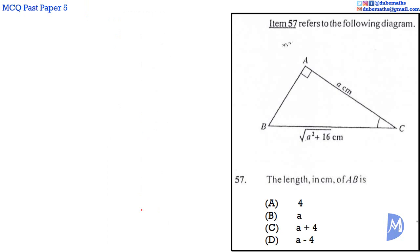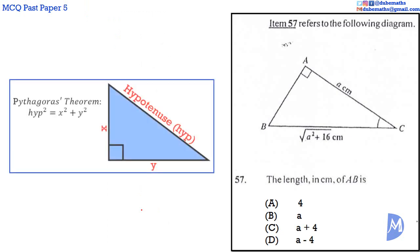Question 57. In a right-angled triangle by Pythagoras' theorem, the hypotenuse squared is equal to the sum of the squares of the other two sides.